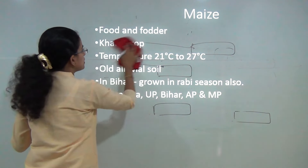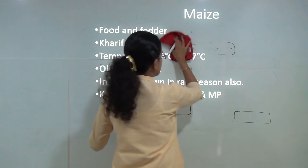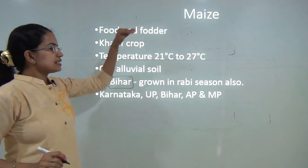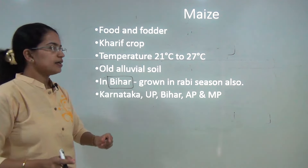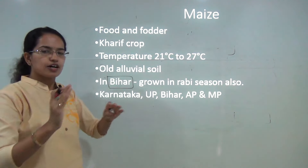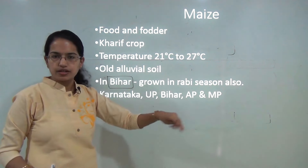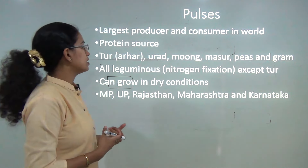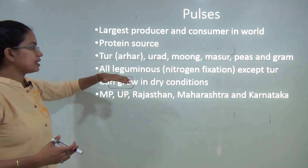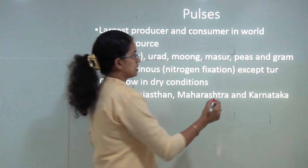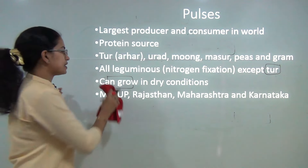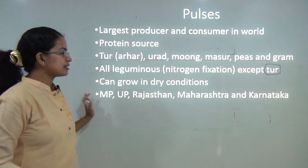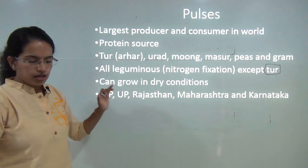Maize is a food and fodder crop — predominantly a Kharif crop, but in Bihar it is a Rabi crop, which is an important exception. India is the largest producer and consumer of pulses in the world. Pulses are a high source of protein. All pulses are leguminous except Tur — this exception is important. Pulses can grow in dry seasons and the north and northwest areas are predominant for pulse production.